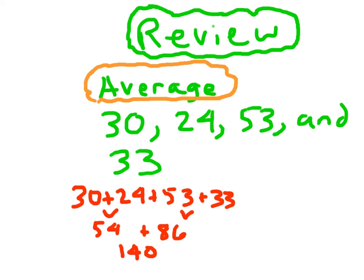Now, I'm going to take that 140 and do what? Divide, right. And what am I dividing by? 4, because there are 4 numbers that I'm averaging. 1, 2, 3, and 4.